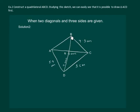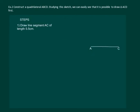Using a ruler, draw line segment AC of length 5.5 centimeters.